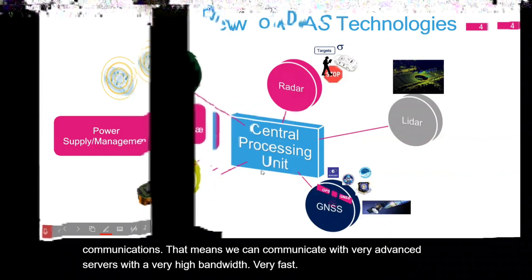V2X means vehicle-to-everything — X represents connections to multiple vehicles and infrastructure. V2V is vehicle-to-vehicle. This is the telematics concept, enabling vehicles to share information with each other and with the network.